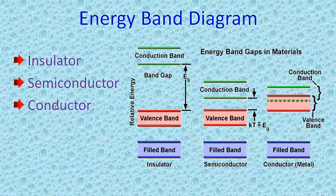Next, conductors. Conductors are substances which have the property to pass different types of energy. The energy band diagram for a conductor shows the valence band is partially filled. Since there are numerous empty levels, electrons are free to move under the influence of an electric field. Metal is taken as an example for a conductor.